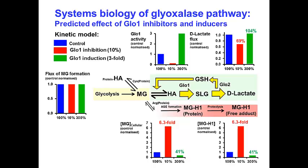In the control situation, colored blue, I have normalized levels of glyoxalase activity, D-lactate flux, methylglyoxal concentration, and MGH1 glycation adduct production in cells to unity. Looking at the effect of 90% inhibition of glyoxalase 1 — say by a cell-permeable glyoxalase 1 inhibitor developed for cancer chemotherapy — this leads to a slight decrease in D-lactate flux but not strong inhibition, because the increasing methylglyoxal concentration can utilize the remaining glyoxalase 1 activity.